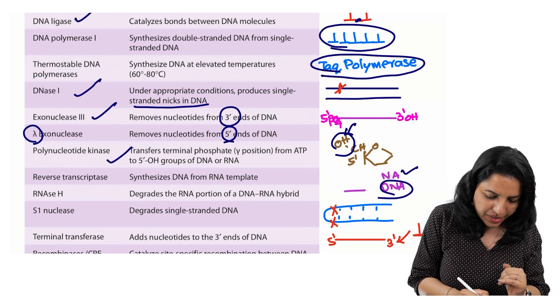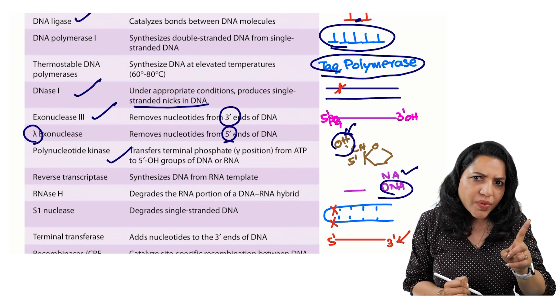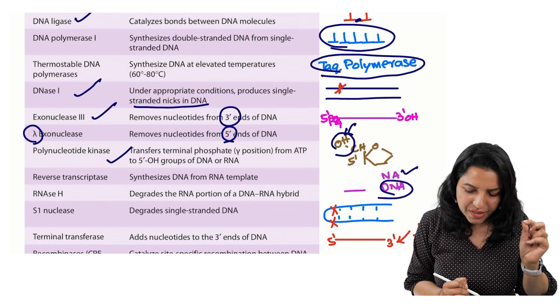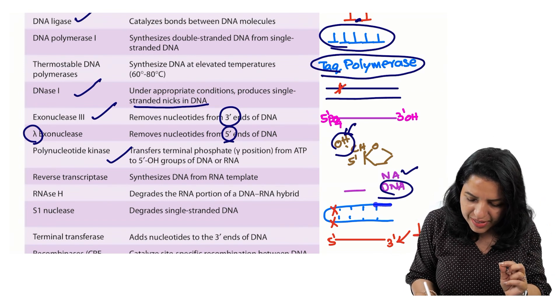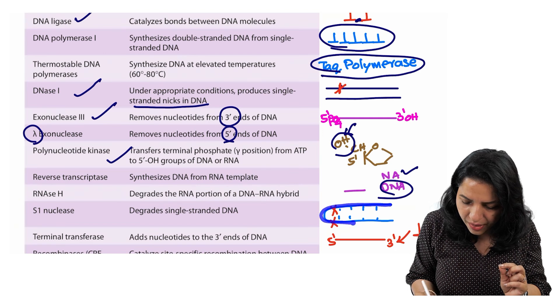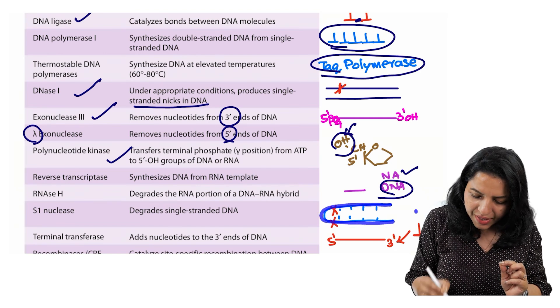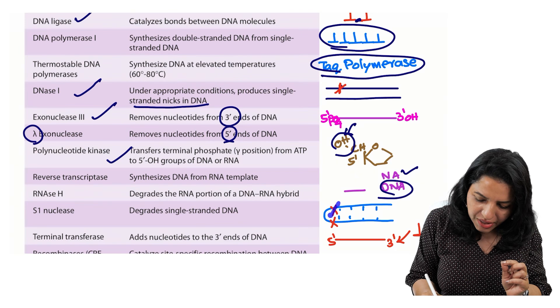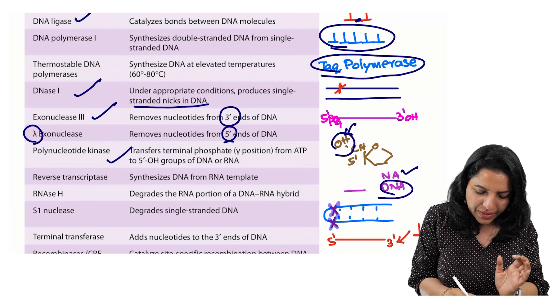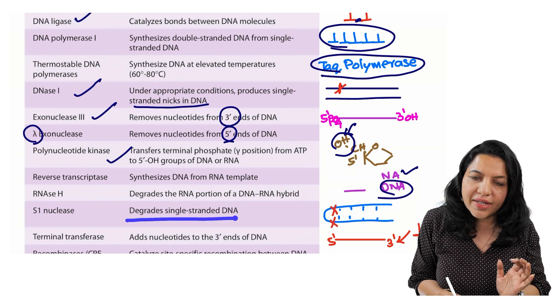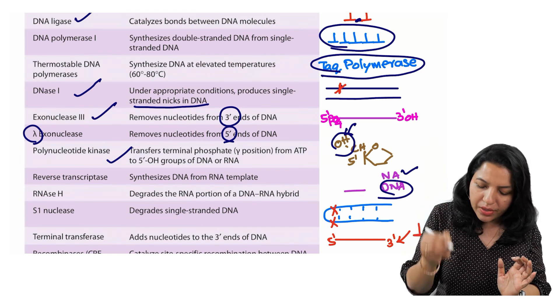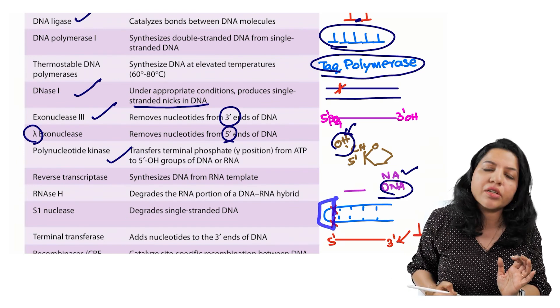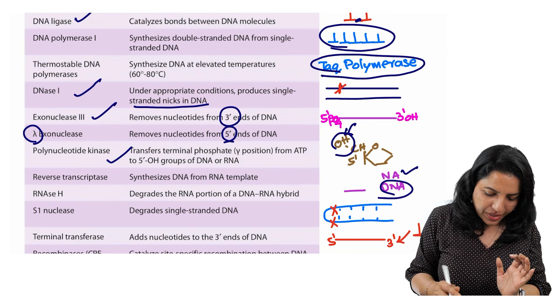Next what you can see is the S1 nuclease. S1 nuclease is a little complicated. That is when a single-stranded DNA forms a hairpin loop like this, then S1 nuclease is something which degrades these ends. You can see that it degrades a single-stranded DNA which forms a hairpin loops and at the ends which are cut using S1 nuclease.